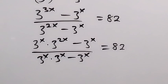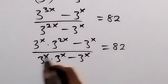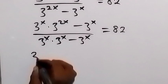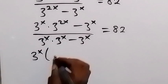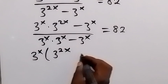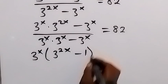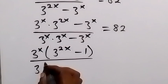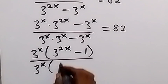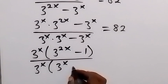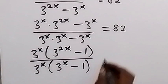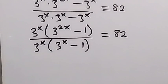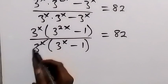From here, we have 3 raised to the power x in the numerator and 3 raised to the power x in the denominator — we have 3 raised to the power x, then minus 3 raised to the power x, then minus 1 left here. Then minus 3 raised to the power x equals to 82. Then from here, 3 raised to the power x cancels out.